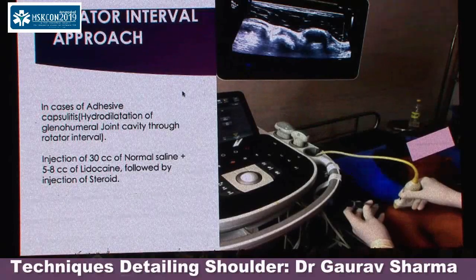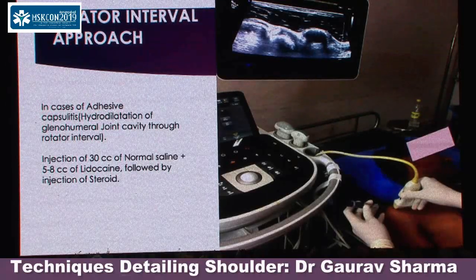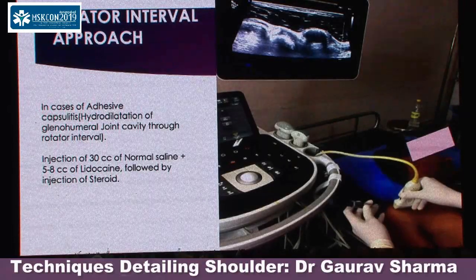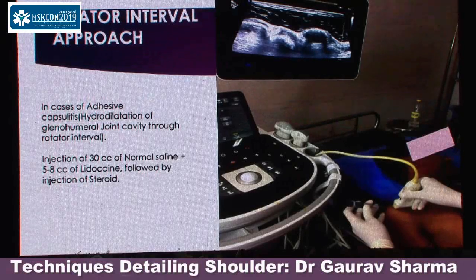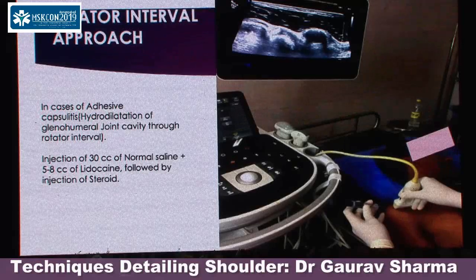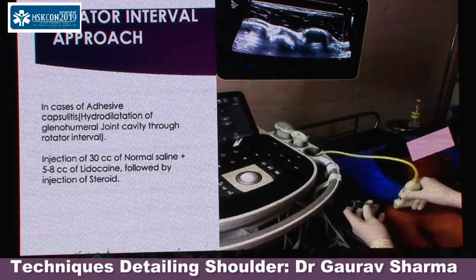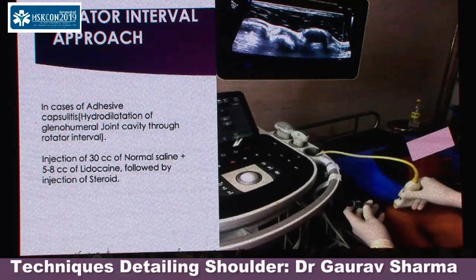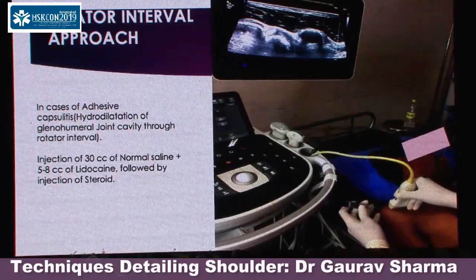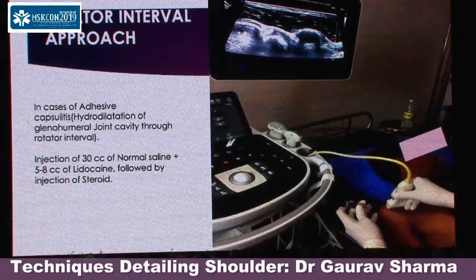The rotator interval approach is primarily reserved for cases of adhesive capsulitis — frozen shoulder. In adhesive capsulitis, granulation tissue develops within the rotator interval, the joint capsule becomes contracted, joint capacity is lost, and the patient has restriction of motion. Our aim is to distend the joint capsule as much as possible, break the adhesions in the joint capsule, and most importantly break the adhesions in the rotator interval. Patient outcomes are much better when hydrodilatation is done through the rotator interval versus the posterior approach.